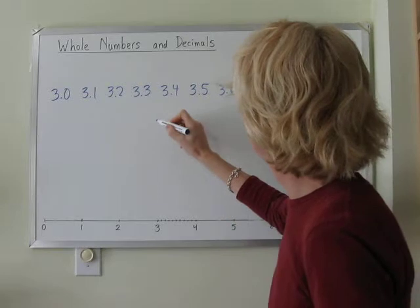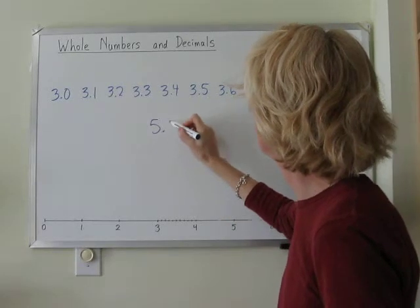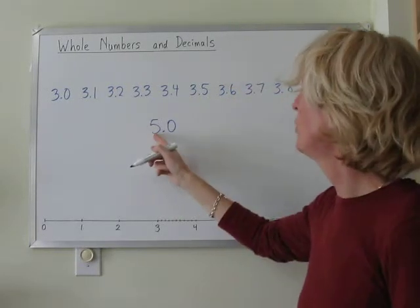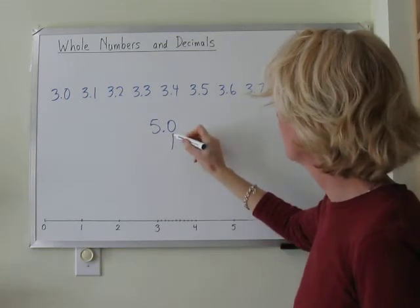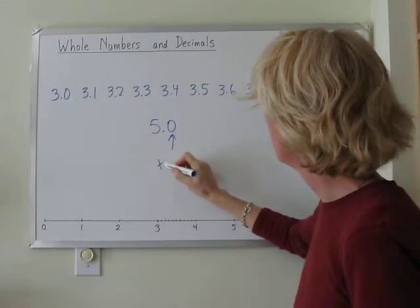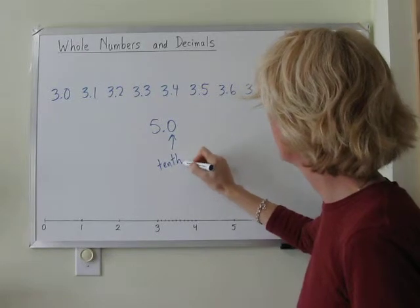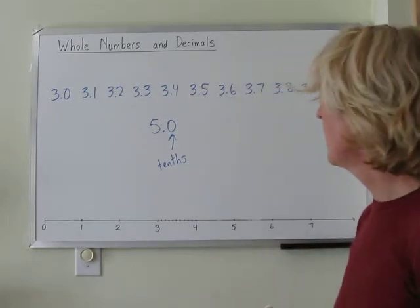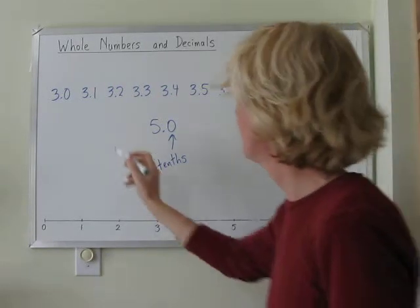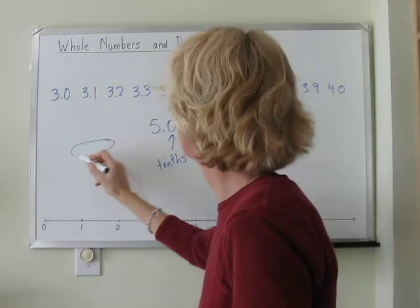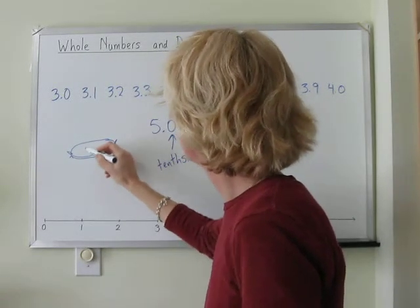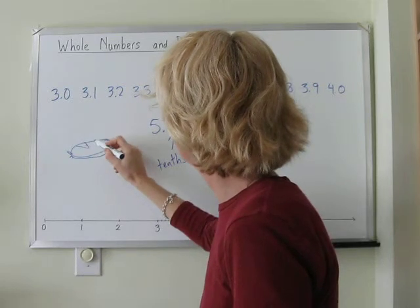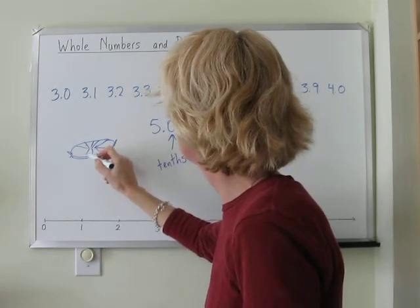Now, if we have our whole number and a decimal here, this first position is called tenths. And that means, if we have a pie in our little pie plate, and it is divided into ten pieces,